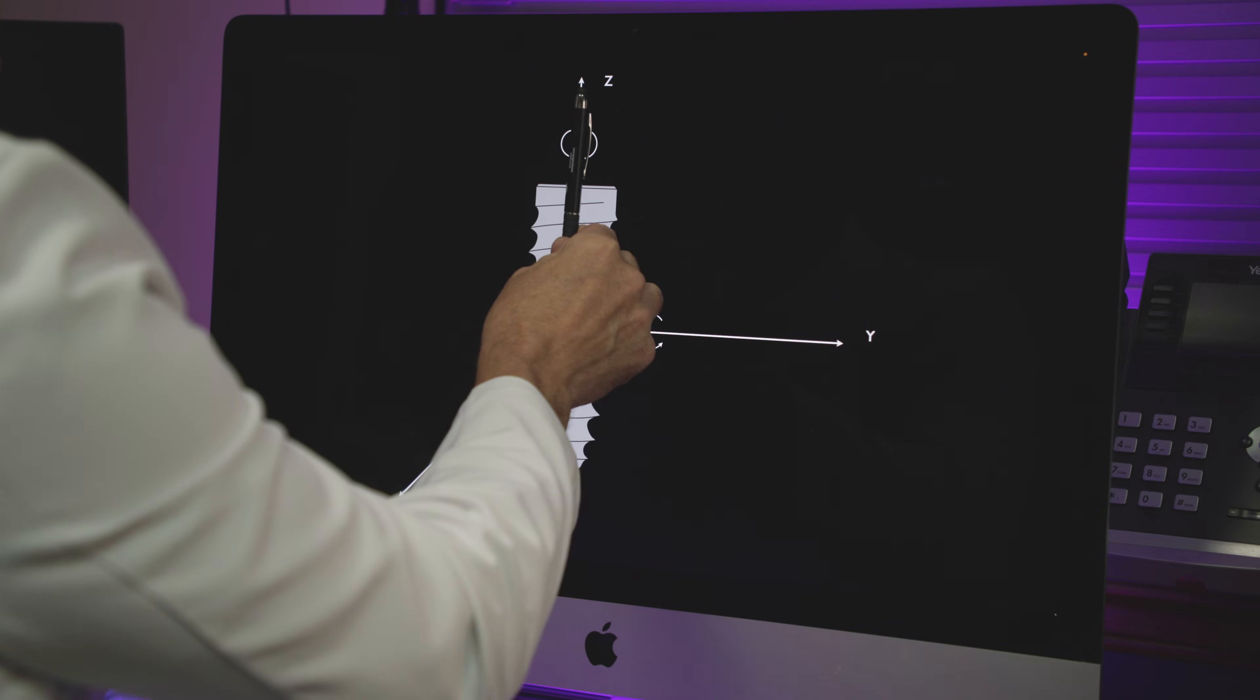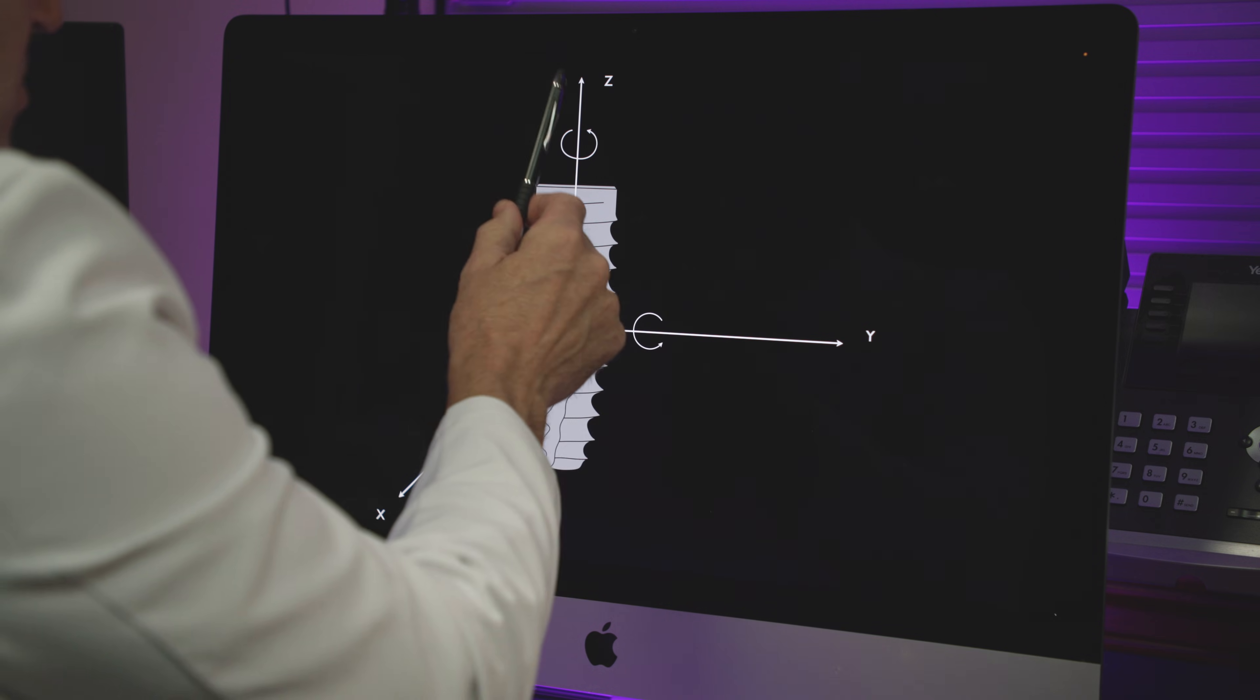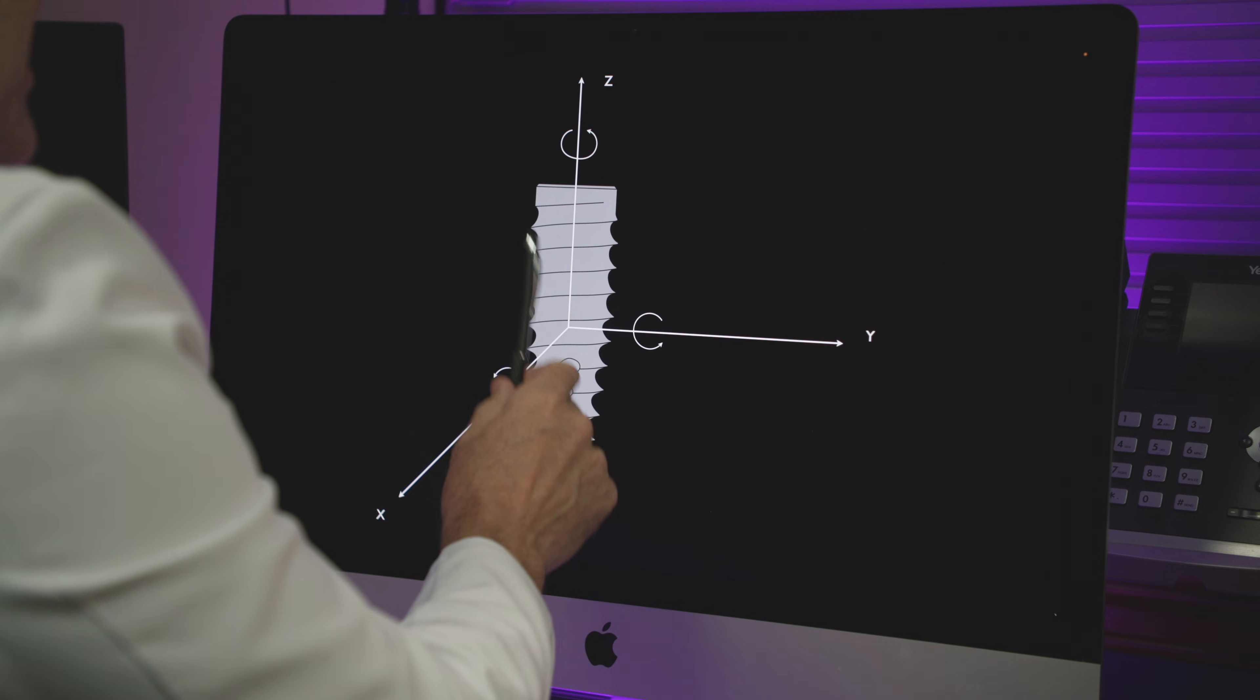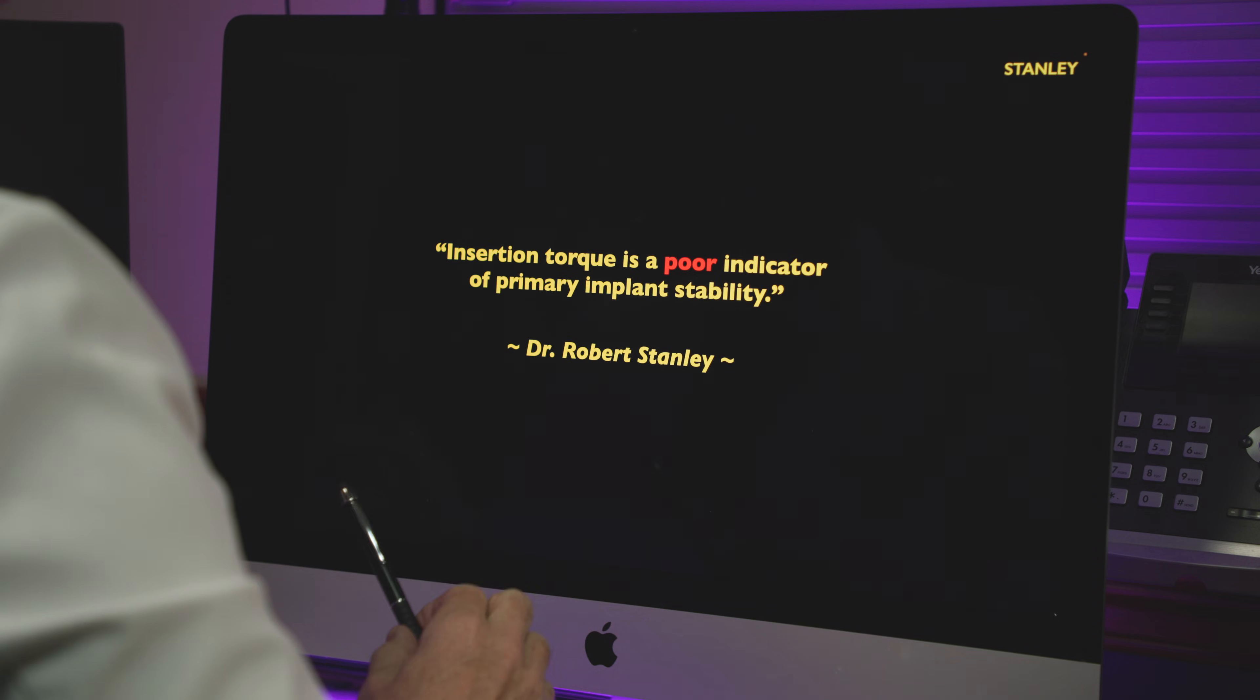The Z rotation is our insertion rotation. So that one rotation is the one that we measure our torque on, right? But it doesn't have anything to do with those other five movements, does it? So let's get into it a little bit more.